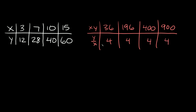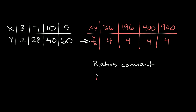The constant pattern is on the bottom with the ratios. Since the ratios are constant — and it's counterintuitive again — this table shows direct variation.